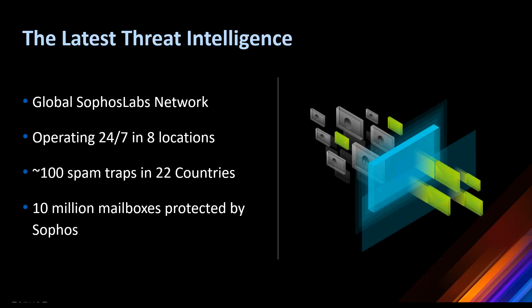I just want to talk about the latest threat intelligence. Threat intelligence is delivered by SophosLabs, giving us the latest understanding of the threat landscape and how to block attacks. SophosLabs is a globally distributed organisation based out of eight locations with an excellent geographic spread. This allows Sophos to provide 24/7 coverage to the whole threat landscape globally. There are only a handful of vendors that have labs set up like this, running primary research into the latest threats and how to stop them.